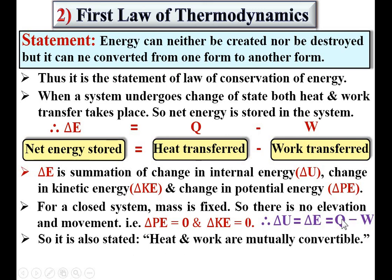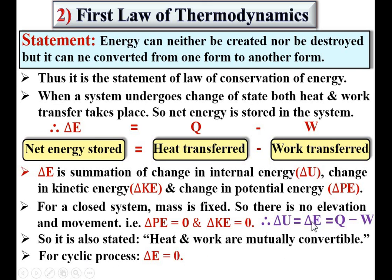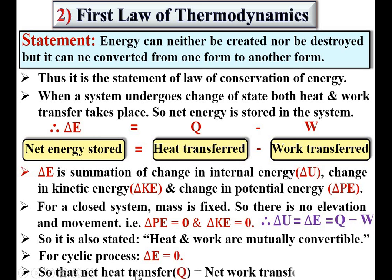It is also stated that heat and work are mutually convertible. For a cyclic process, delta E is also zero — this is a special case. A cyclic process means the system passes through different processes and returns to its original state, so there is no change in energy, giving delta E = 0. If delta E equals zero, then Q equals W. That is, net heat transfer Q equals net work transfer W. This is also a statement of the first law of thermodynamics for the cyclic process.